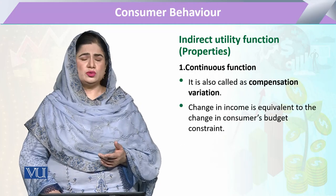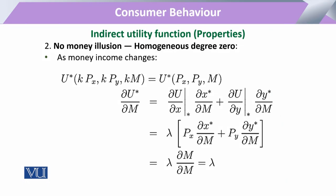The next property is no money illusion. When we take the utility function of the consumer, we take that utility is a function of price and money income. To prove no money illusion, we add a parameter or coefficient lambda to all of these variables. If we take the change in the optimal level of utility due to a change in money income, then by taking the first-order derivative, we see the change in utility through the change in commodity x quantity.